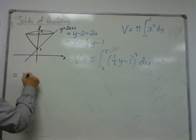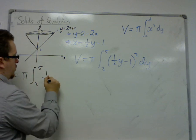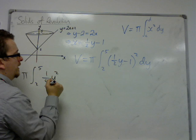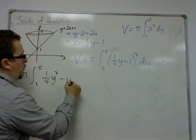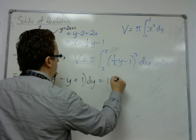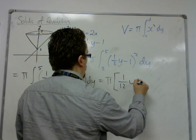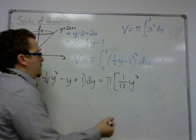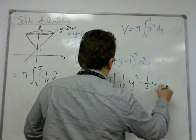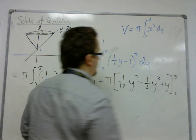Now I'm going to have to multiply out that bracket in this case. So we're going to get 1 quarter y squared minus y plus 1 dy. Then we can integrate. So that's 1 twelfth y cubed minus 1 half y squared plus y. Evaluate between 2 and 5.